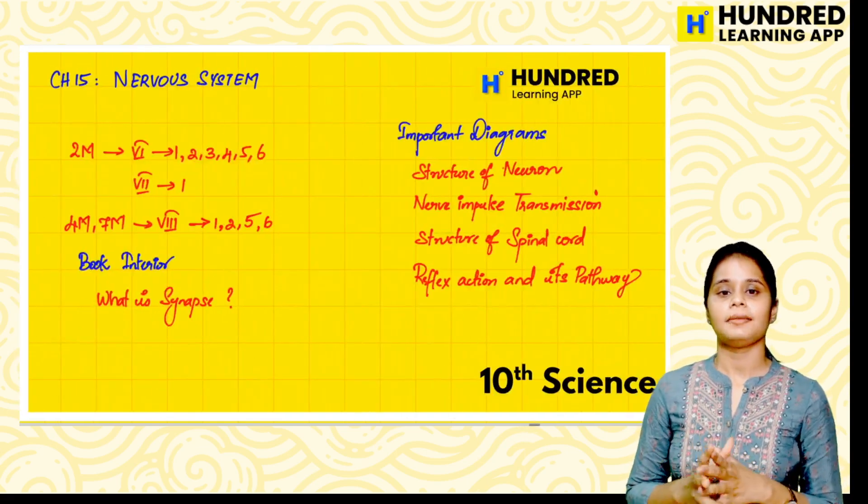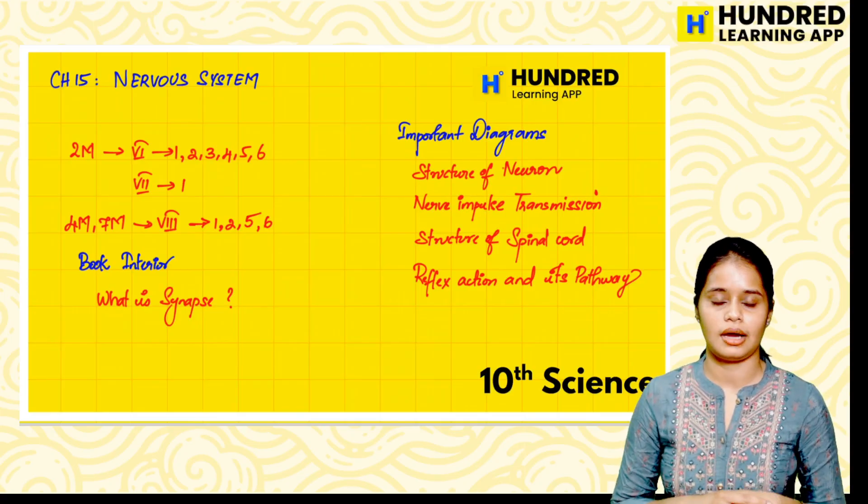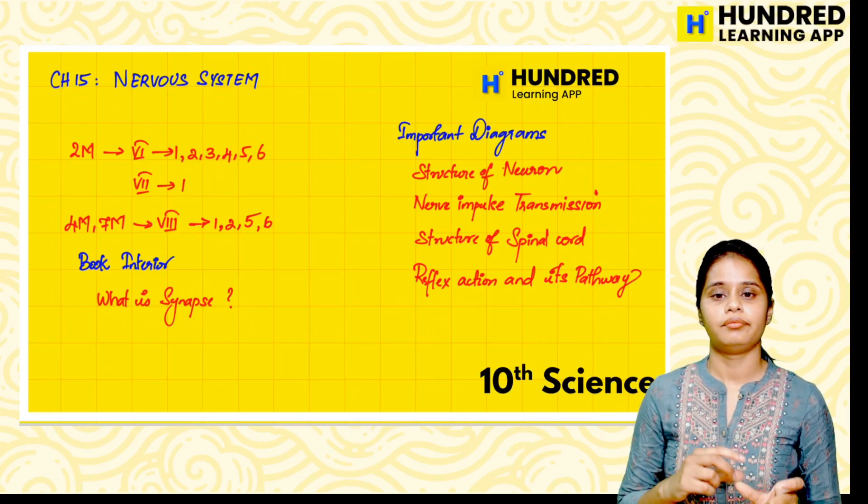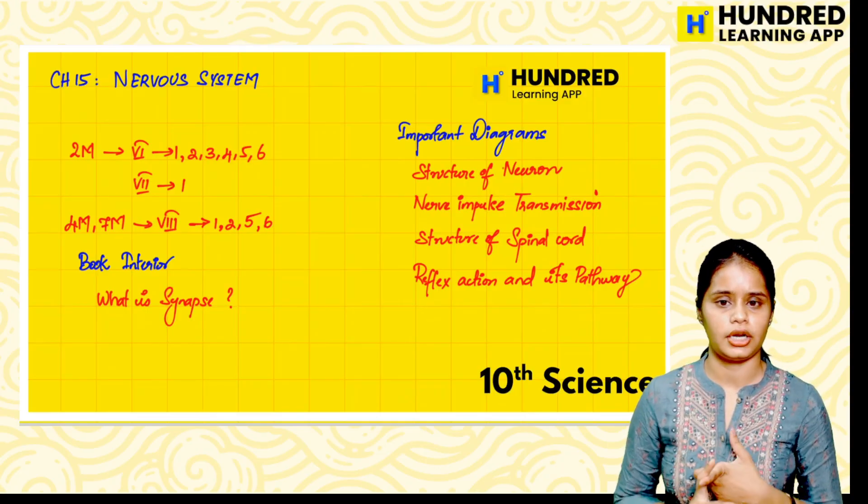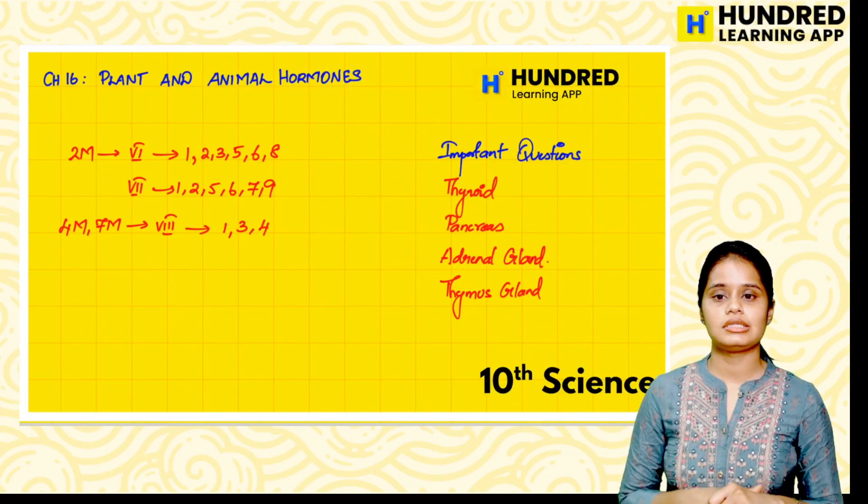And that is Nervous system. Book interior two marks - Synapses. And important diagram Structure of Neuron, very important, so we have to learn about this.